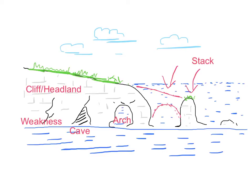Erosion doesn't stop with the formation of a stack. In time, the stack becomes smaller and may collapse, leaving behind a residue of rock — a little knob of rock which might be covered at high tide — and that we call a stump. Features furthest out to sea have been exposed to the most erosion and tend to be the smallest. So the sequence runs: cliff and headland → cave → arch → stack → stump. Don't forget that working away at the bottom of the cliff, the processes of hydraulic action, attrition, abrasion, and solution create wave cut notches and wave cut platforms.